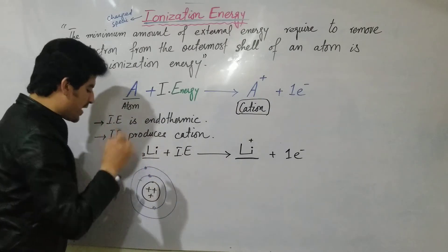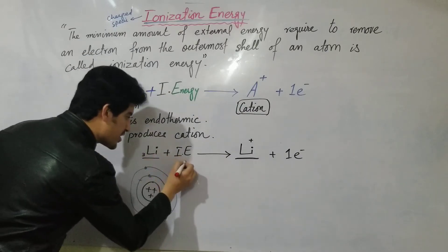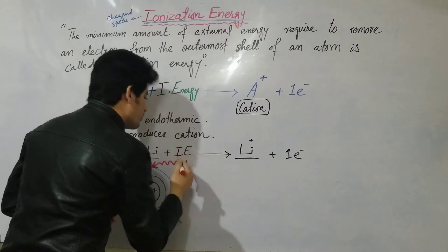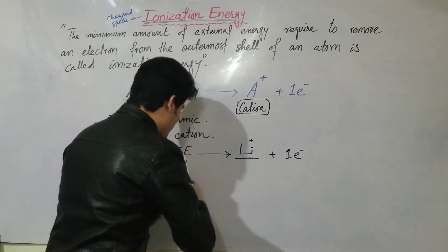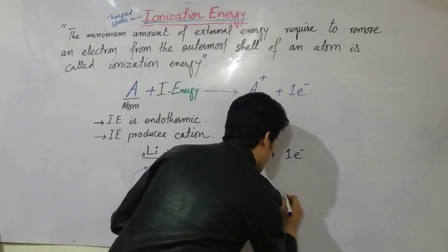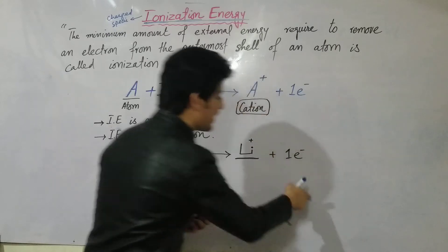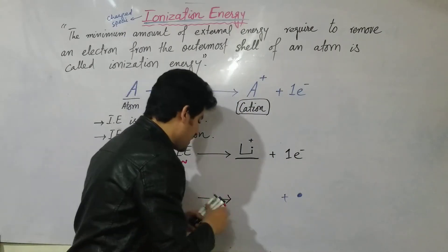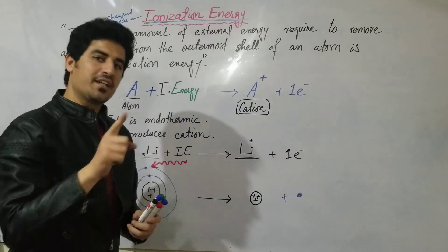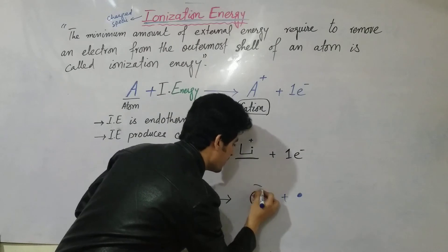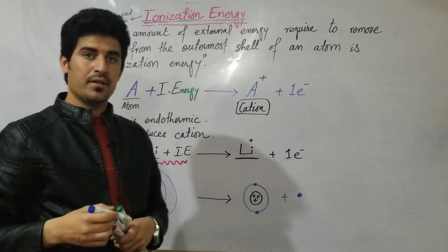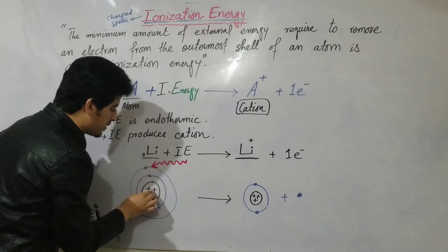This is the lithium atom — it has one electron in its outermost shell. When ionization energy arrives, it pushes and removes that electron. The blue electron is removed from the lithium atom by the ionization energy. When an electron is removed from an atom, it becomes a cation.